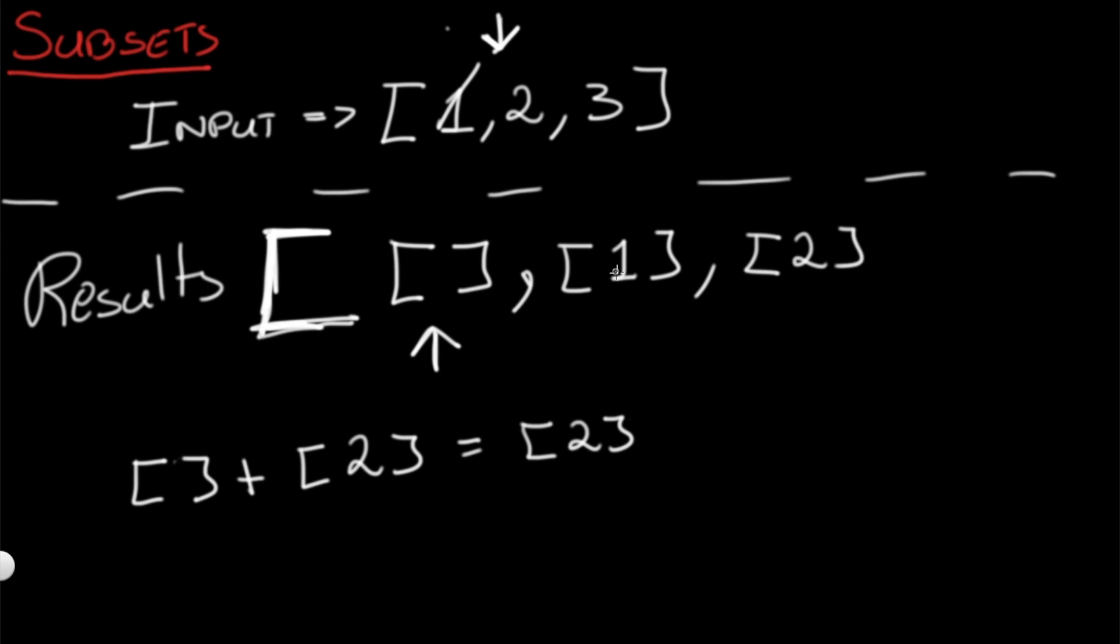Again over here we have the number 1, so we're going to add a list with [1] plus a list with [2]. Over here we're going to get [1, 2]. We're going to add that to our results as well, and now we're done with this.